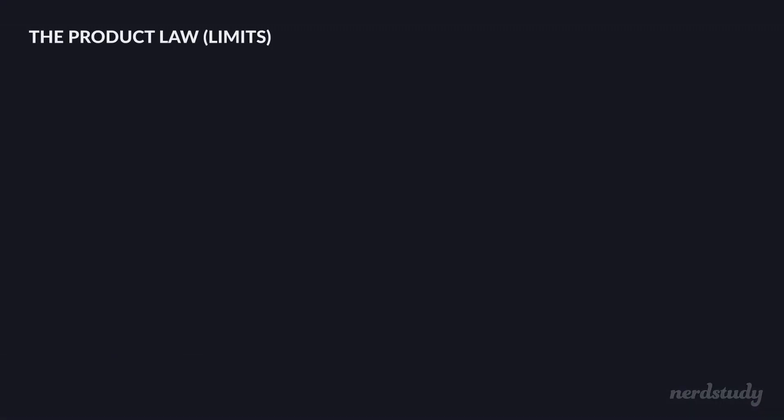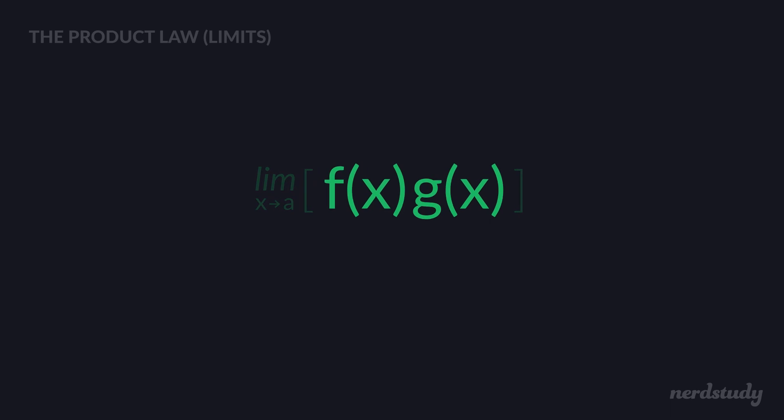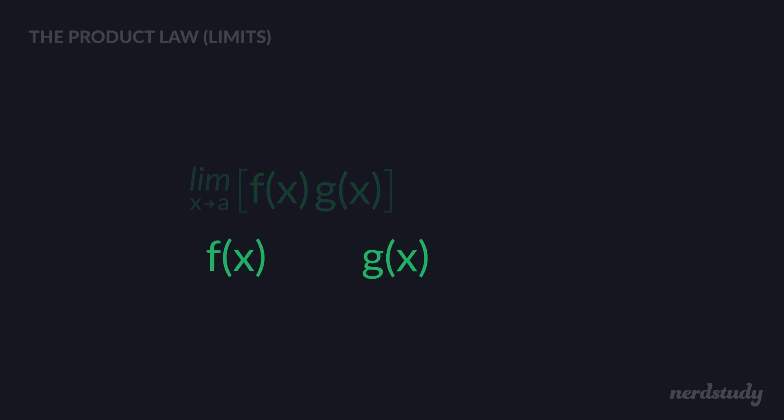Let's start off this lesson with the product law. What the product law states is that when you're looking at a limit with x approaching a of a function where it is two different functions being multiplied together — f of x and g of x — you can take the two functions and find the limits of them separately and then multiply them.